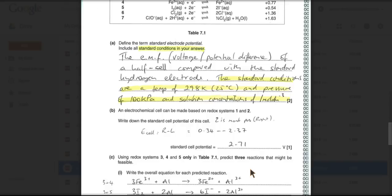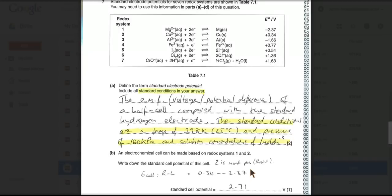Using redox systems 3, 4 and 5 only, predict 3 reactions that might be feasible. So if I just go back to the table 3, 4 and 5.